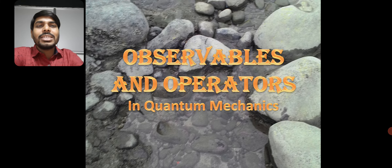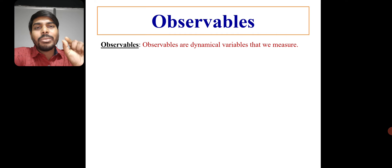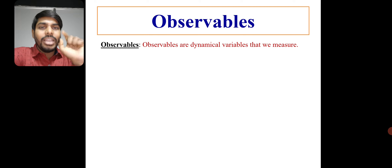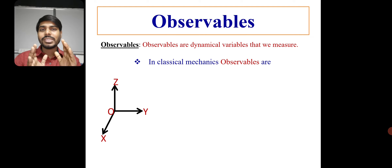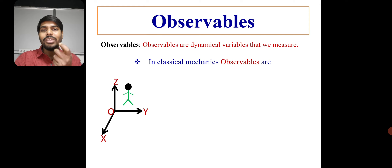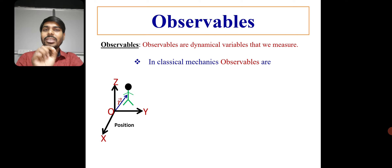First, let's start with the meaning of observables. What is the observable? Observables are the dynamical variables that we measure. Let's take an example from classical mechanics. If I consider a three-dimensional space and we want to locate a person, we need the position vector — with direction and magnitude — which gives you the position. So position is the observable we can measure in classical mechanics.